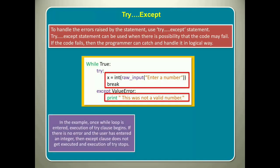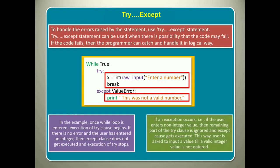In the example, once while loop is entered, execution of try clause begins. If there is no error and the user has entered an integer, then accept clause does not get executed and execution of try stops. If an exception occurs, i.e., if the user enters non-integer value, then remaining part of the try clause is ignored and accept clause gets executed. This way, user is asked to input a value till a valid integer value is not entered.